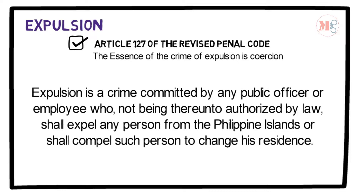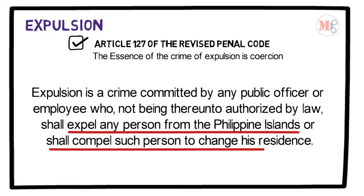There are two punishable acts under Article 127. First, expelling a person from the Philippines. Second, compelling a person to change his residence. Ito ay isang krimen ng pagpapalayas ng tao sa Pilipinas o pagpilit sa isang tao para magpalit o lumipat ng tirahan.